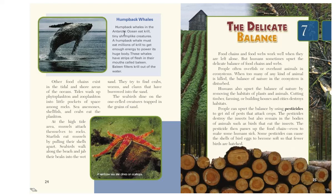Humpback whales in the Antarctic Ocean eat krill — tiny shrimp-like creatures. A humpback whale must eat millions of krill to get enough energy to power its huge body. These whales have strips of flesh in their mouths called baleen, which filters krill out of the water. Other food chains exist in tidal and shore areas. Tides wash up phytoplankton and zooplankton into little pockets of space among rocks. Sea anemones, shellfish, and crabs eat the plankton. At the high tide area, mussels attach themselves to rocks and starfish eat mussels by pulling their shells apart. Seabirds walk along the beach, jabbing their beaks into the wet sand to find crabs, worms, and clams, and dine on one-celled creatures trapped in the grains of sand.